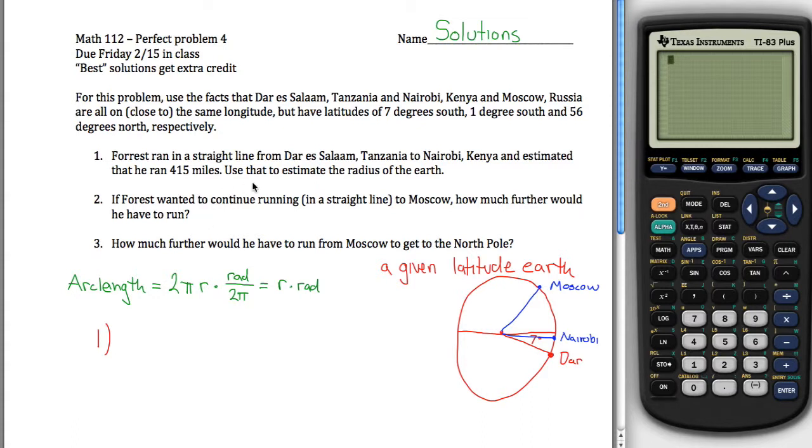So really the trick to this problem is noting that the degrees from Dar to Kenya is 6 degrees. If one's 1 degree south and the other 7 degrees south, the difference is 6 degrees.